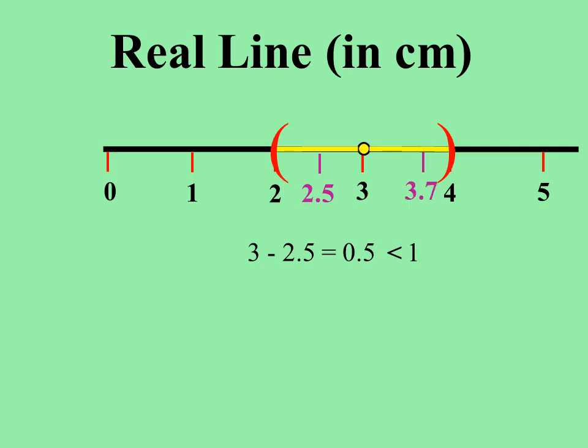Similarly, consider another point 3.7. The distance between points 3 and 3.7 is 0.7 centimeter. The value 0.7 centimeter is less than the radius 1 centimeter. This open interval satisfies the condition |x − 3| < r — that is, the distance between any point in this interval and the center point 3 is less than the radius r. Hence, the open interval (2, 4) is a neighborhood of the point 3.